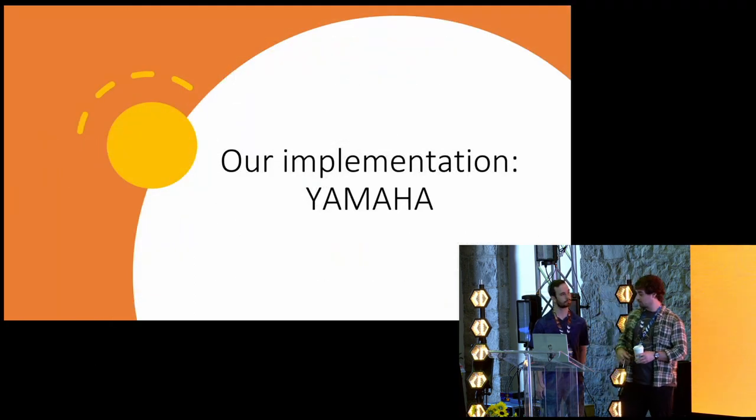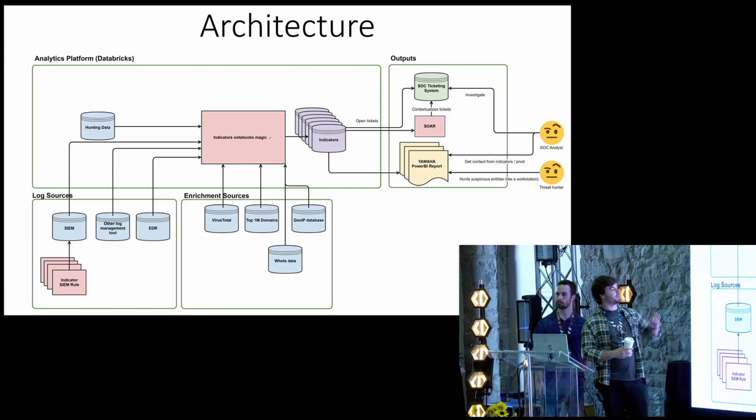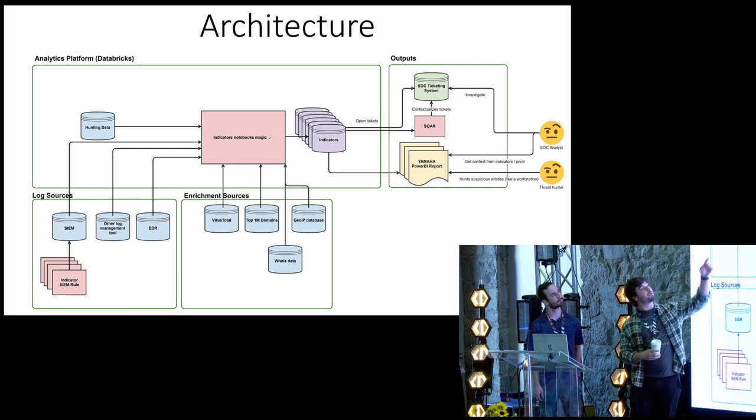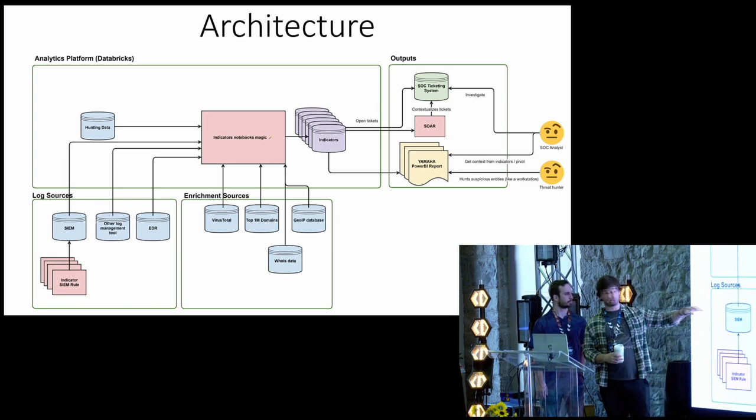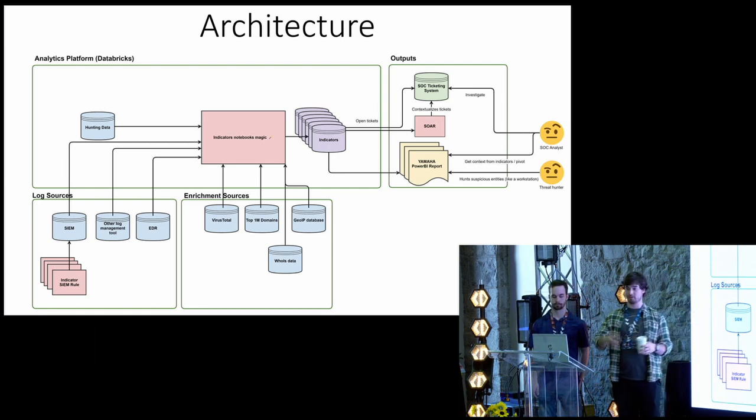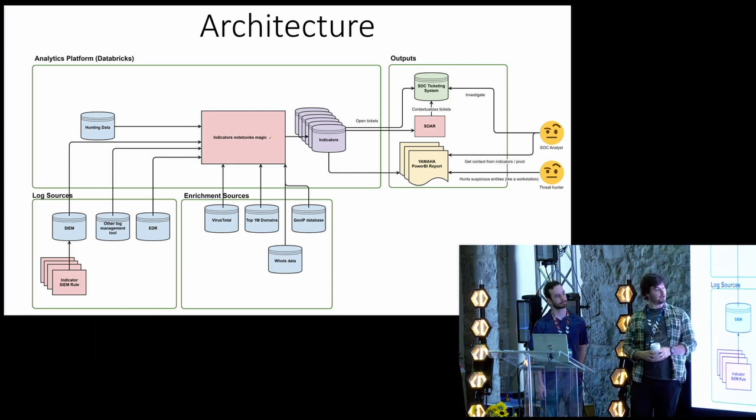So let's go to the implementation. What did we do? So there's four blocks. There are the log sources, the enrichment sources, the analytic platform, which is Databricks, and the outputs. So first, in the log source, you want a SIEM. There are probably already some detection logic implemented there. You can put some simple indicators there and forward them to the analytic platform. The other log management tools, the EDR firewalls, everything. You can maybe pull directly the data from your analytic platform.